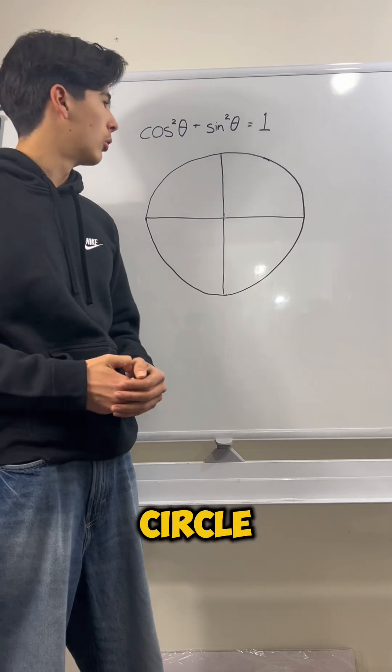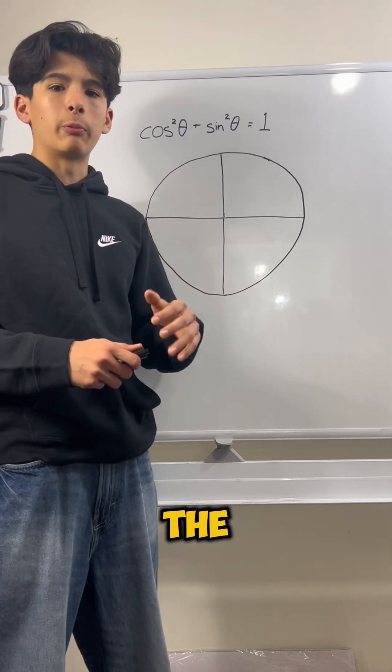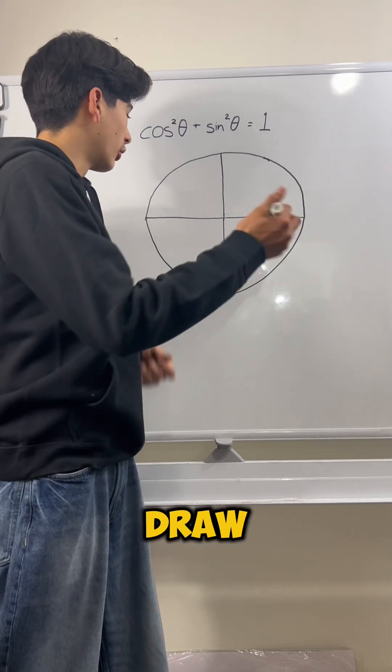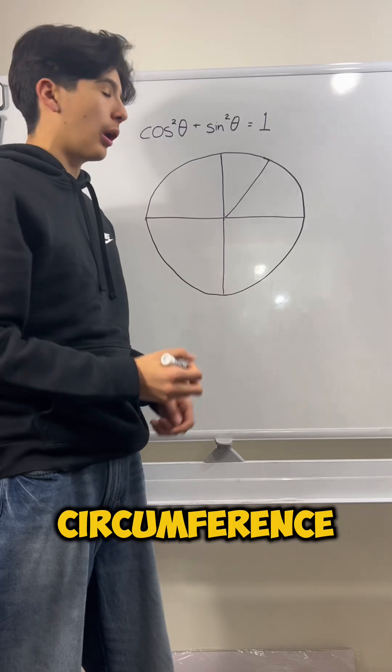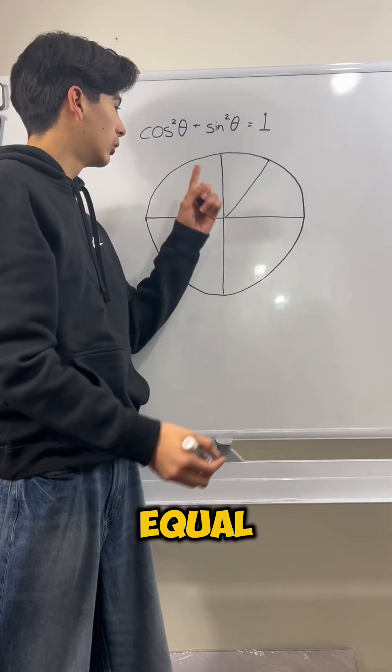What even is a unit circle? It's essentially a circle with a radius of 1. So anywhere you draw a point from the center to the circumference, it is just equal to 1.